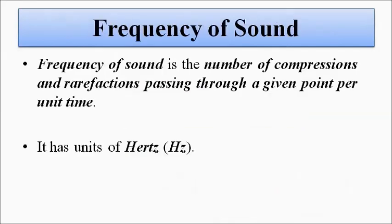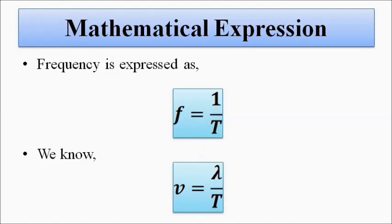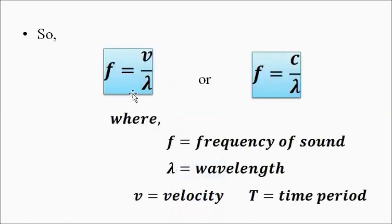Another important characteristic is the frequency of sound. Frequency is the number of compressions and rarefactions passing through a given point per unit time. It is directly related to the time period — the time taken by the sound wave to complete one full oscillation. The mathematical expression for frequency is the reciprocal of the time period, with a unit of hertz, and the speed of sound gives us: f = v/λ (velocity divided by wavelength).